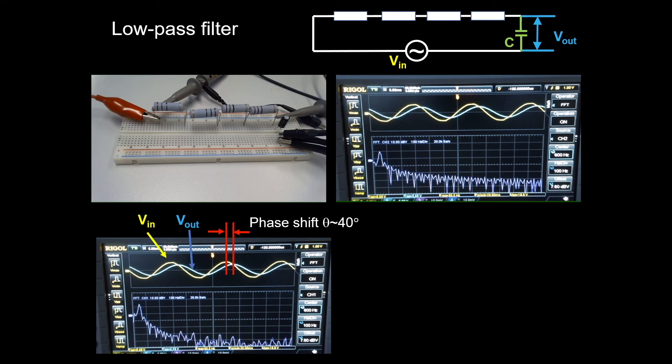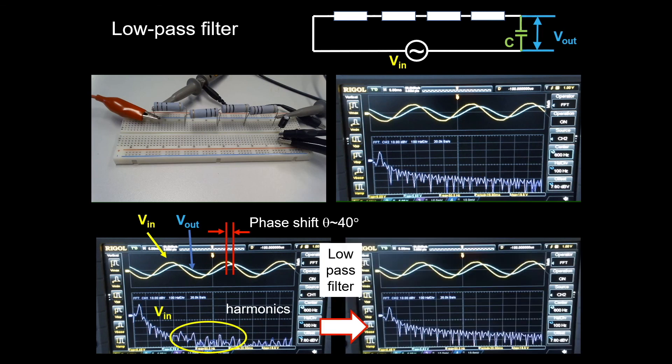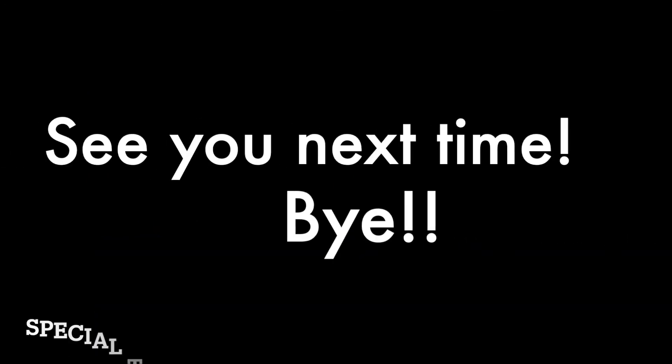To look carefully at the input and output signal, they are phase-shifted by about an angle of 40 degrees. The input signal has the original harmonics from the power source. We can now see that the harmonics are suppressed in the output signal. I hope this gives you some understanding about harmonics in power systems in terms of how we can generate them and remove them. Thank you for watching, bye bye.